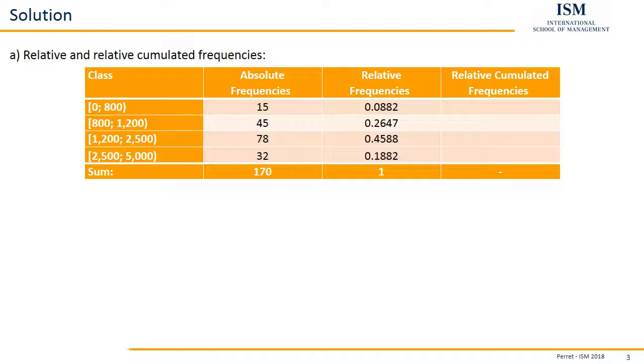The next column is on relative accumulated frequencies. Here we always consider the relative accumulated frequency of the class before the current class, and to this add the relative frequency of the current class. So what we are basically doing in the first one, well we do not have any previous class, so we start with 0 plus the relative frequency of the current class, which is 0.0882.